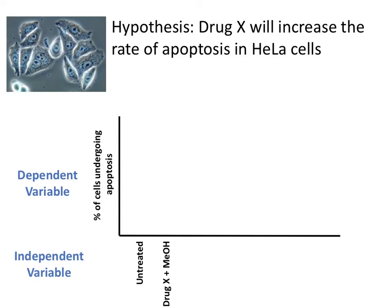We might have an experiment to measure the percentage of cells undergoing apoptosis. We'd have untreated cells, and then we'd give the cells the drug and look for the difference. So these two things are our two variables: we have our independent variable, which is the thing we're actively controlling in the experiment, and then our dependent — or sometimes called the response variable — is the thing that changes as a result of our independent variable. So we set up by saying there's going to be a relationship between an independent and a dependent variable.